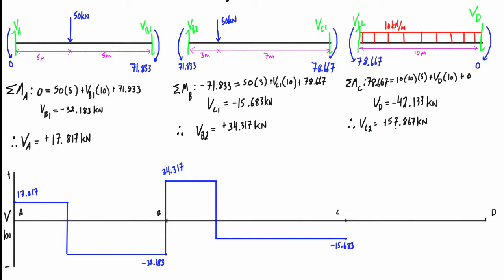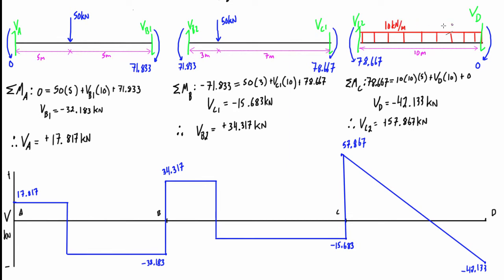In section CD, VC2 is positive 57.867 kN and VD is negative 42.133 kN. There's a big upward jump for the reaction at C. In this region the shear falls linearly due to the constant distributed load of 10 kN/m over 10 meters. The total change in shear magnitude is 57.867 plus 42.133, which equals 100 kN — exactly the total distributed load force. We close off the diagram and label the distances.